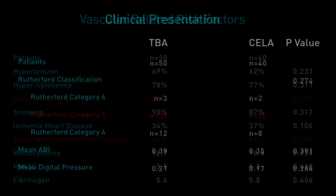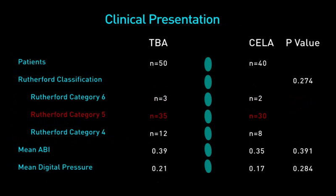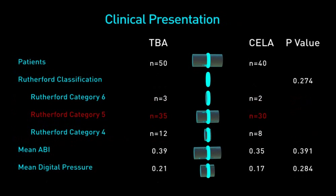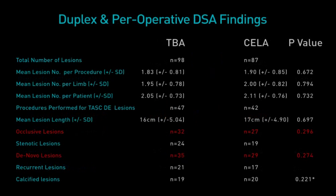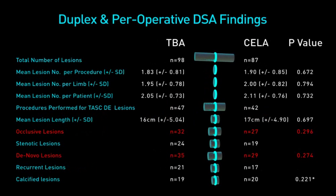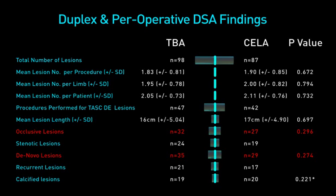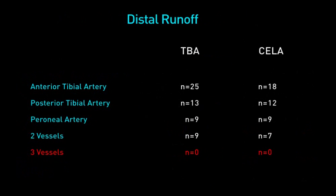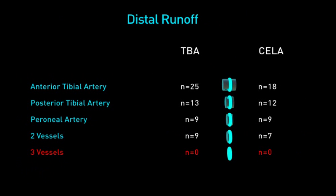All patients had critical limb ischemia at Rutherford category 4, 5, or 6 with TASC-D lesions. Two thirds of lesions were de novo and occlusive. There was no significant difference between groups regarding lesion length, inflow, or runoff. 85% had only one named diseased tibial artery.